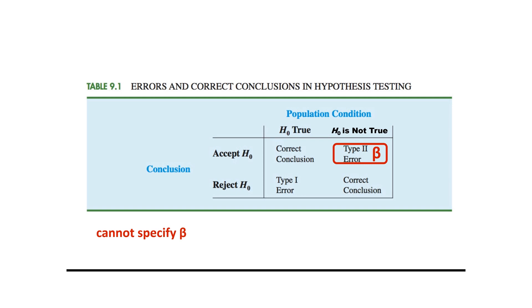We cannot control for the probability of making a type 2 error, beta, nearly as easily as we can control for the probability of making a type 1 error. We cannot simply specify beta.